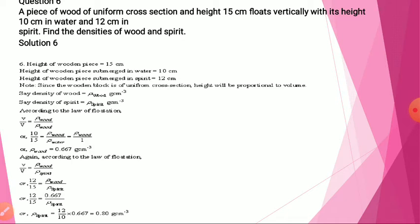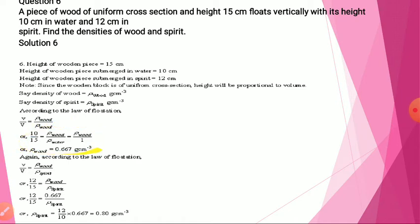Next: a piece of wood of uniform cross-section and height 15 centimeters floats vertically with 10 centimeters in water and 12 centimeters in spirit. Find the densities of wood and spirit. Since the wooden block is uniform, height is proportional to volume. Let density of wood be ρ_wood. According to the law of flotation, 10 by 15 equals ρ_wood upon ρ_water. From this we find the density of wood as 0.667 grams per centimeter cube.